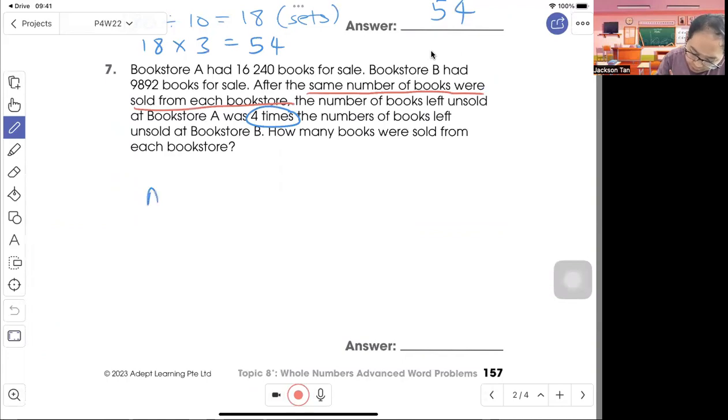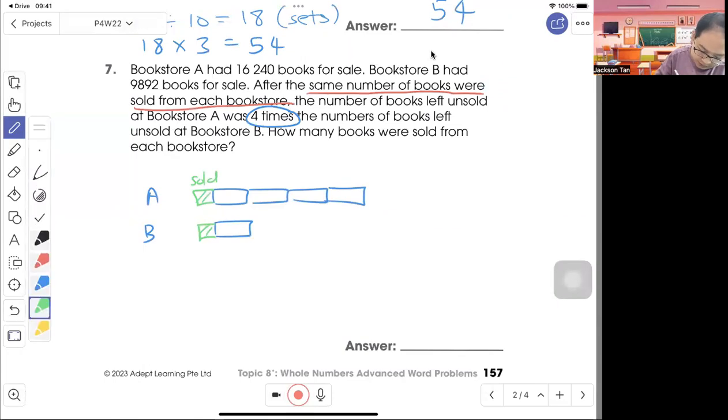So you work backward. You can have your A four times first. 1, 2, 3, 4. B, 1. Then it says same number was sold. So you work back. So this part is the sold.